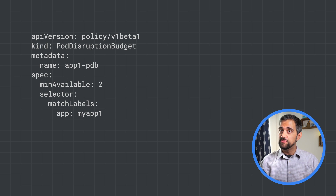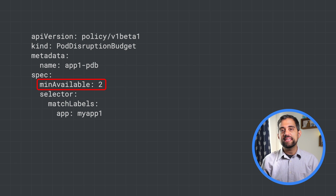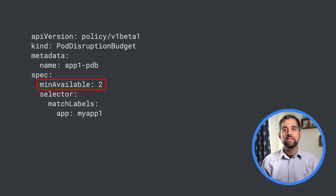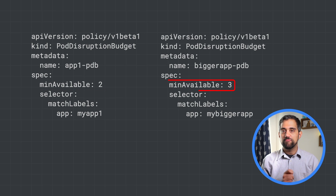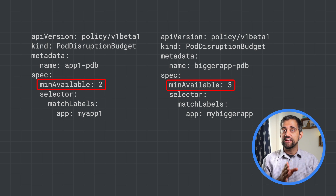Speaking of what your apps need, do you know what your pod disruption budgets are? You can set the number of pods, or the percentage of pods, that can be taken down when doing voluntary disruptions, like upgrades or auto-scaling. Think about the minimum amount of pods that you need to run without disrupting your application's users, and think about that for each application independently. Pod disruption budgets can help keep your apps running as you configure auto-scaling without over-provisioning. We'll talk more about auto-scaling soon.